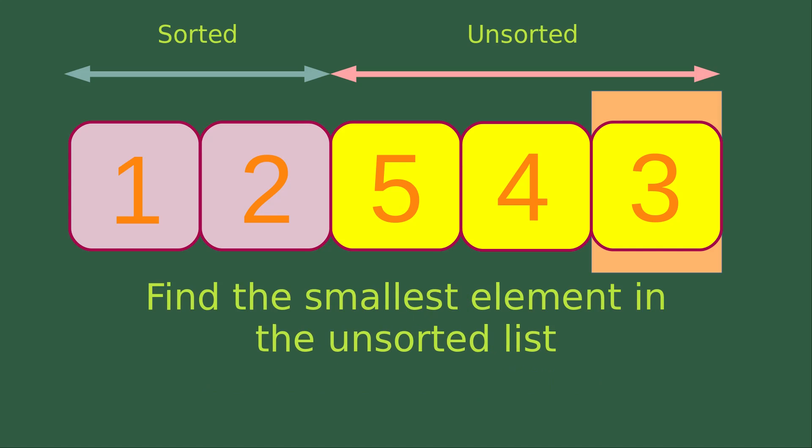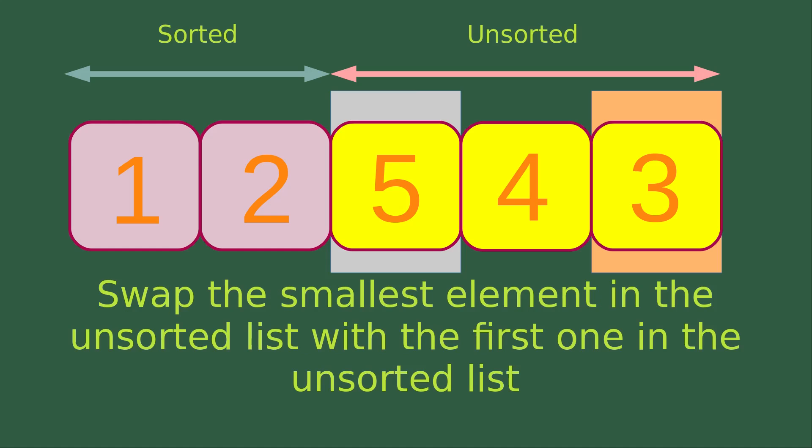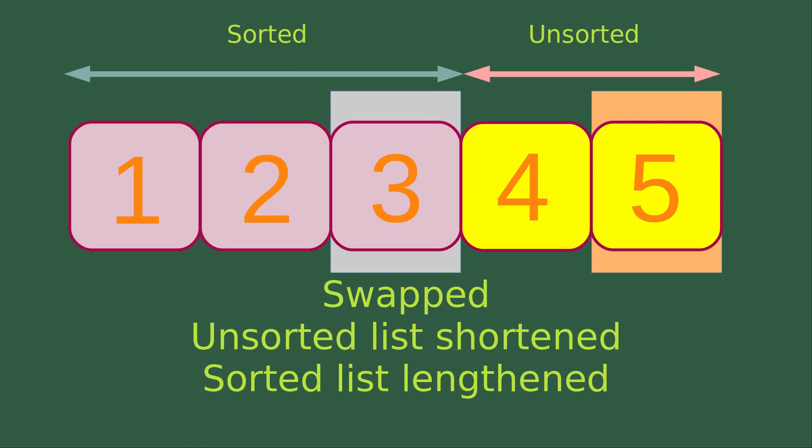We repeat the comparison process in the unsorted list. So now we find out the smallest number in the unsorted list, which is equal to the element with number three. I would like to swap the number obtained previously with the smallest element in the unsorted list, which is the element with number five. Now I've done the swapping. So now the sorted list is lengthened by including an element with number three at the end of the sorted list, and the unsorted list will be shortened by one element.